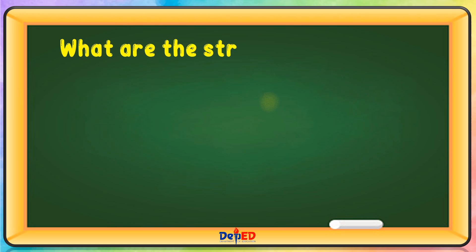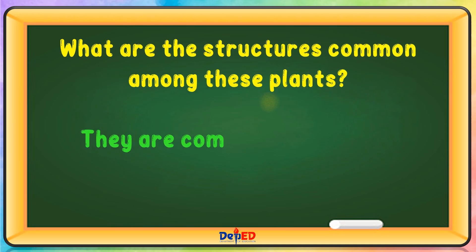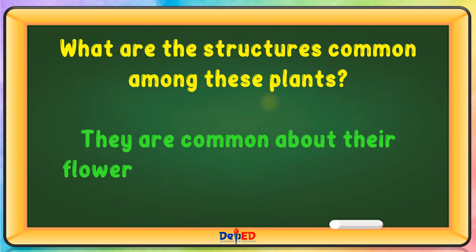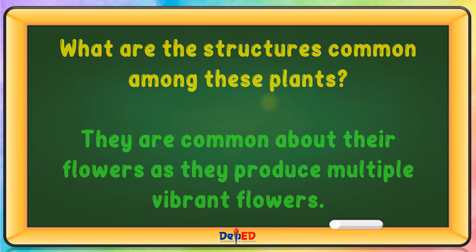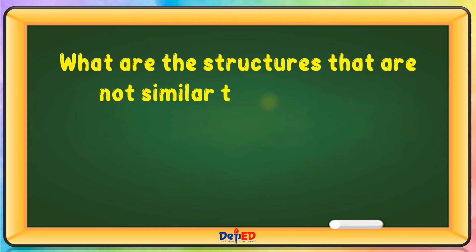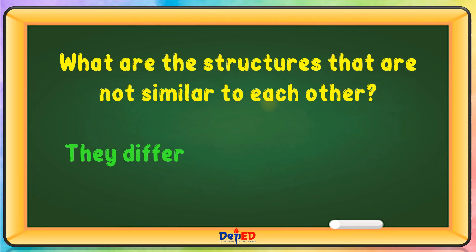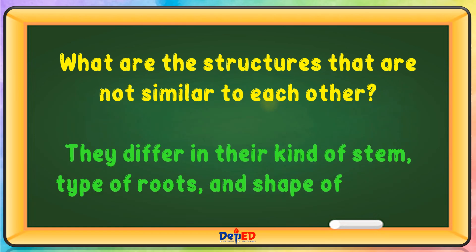What are the structures common among these plants? They are common in their flowers as they produce multiple vibrant flowers. What are the structures that are not similar to each other? They differ in their kind of stem, type of roots, and shape of leaves.